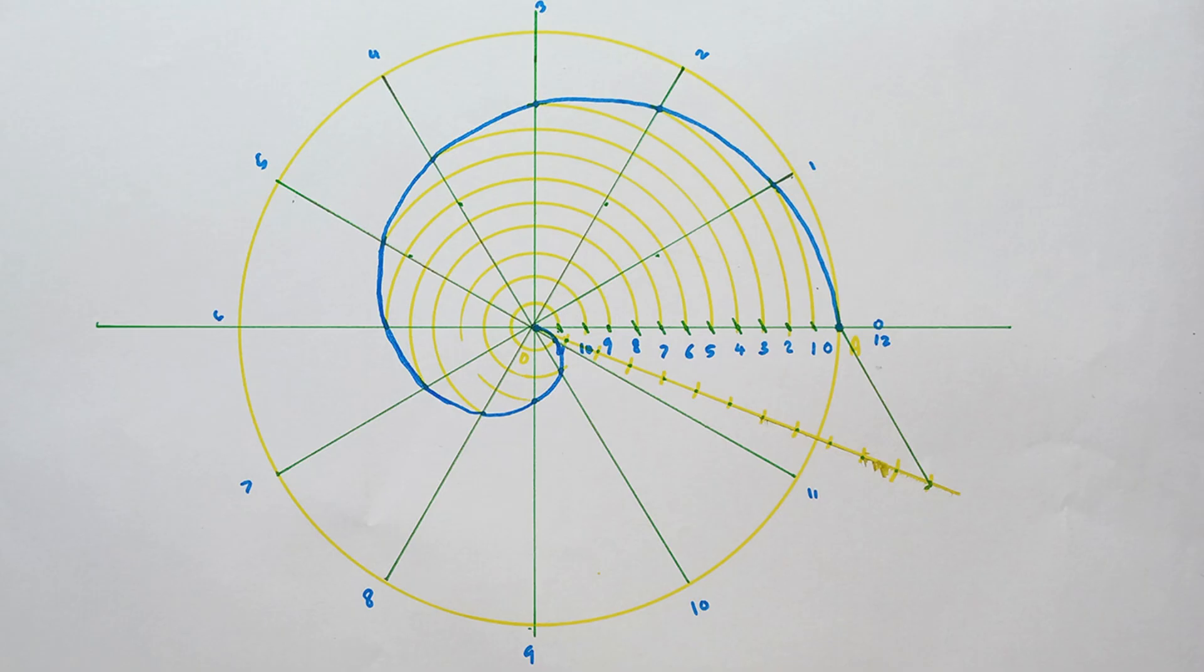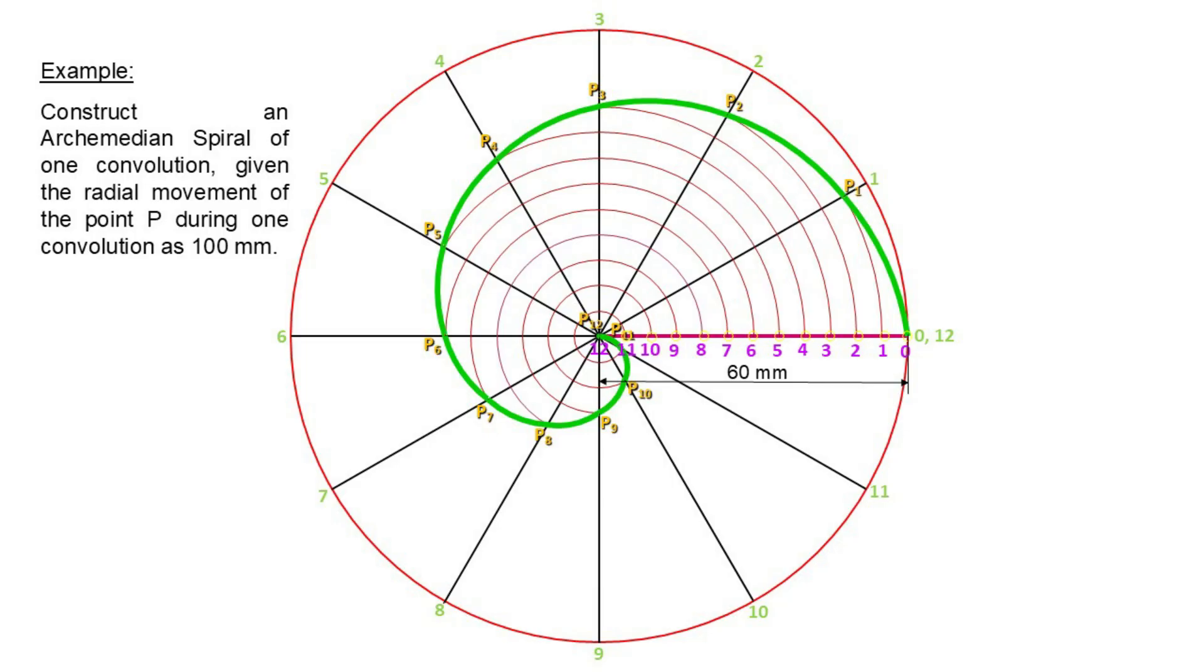Let's see how to construct this Archimedean spiral. I am going to explain it using this example: Construct an Archimedean spiral of one convolution given the radial movement of the point P during the convolution as 100 millimeter.